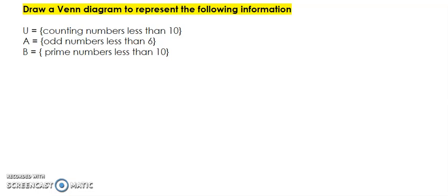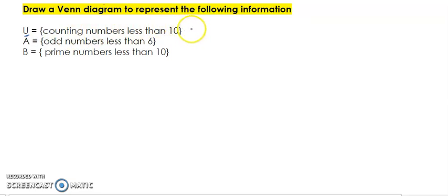So if we look at this question we realize that they have not told us exactly what the members of these sets are, so we're going to have to figure that out. Let's start with the universal set — counting numbers less than 10 would be 1, 2, 3, 4, 5, 6, 7, 8, and 9.